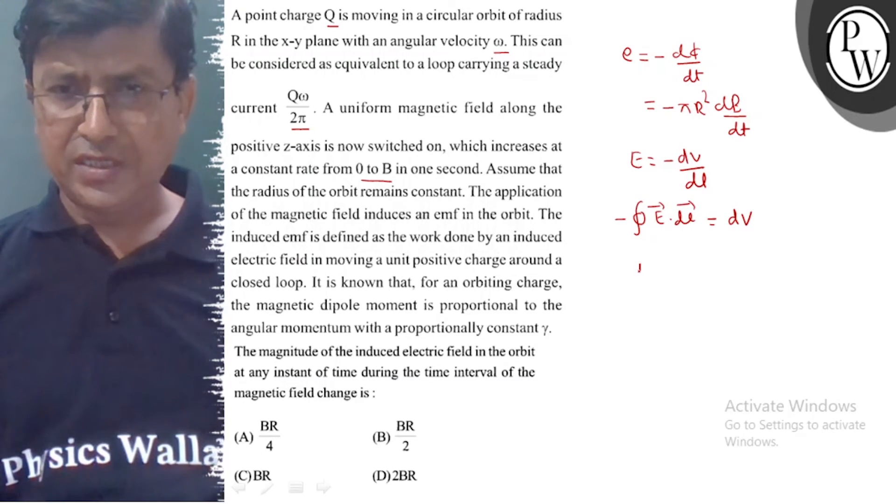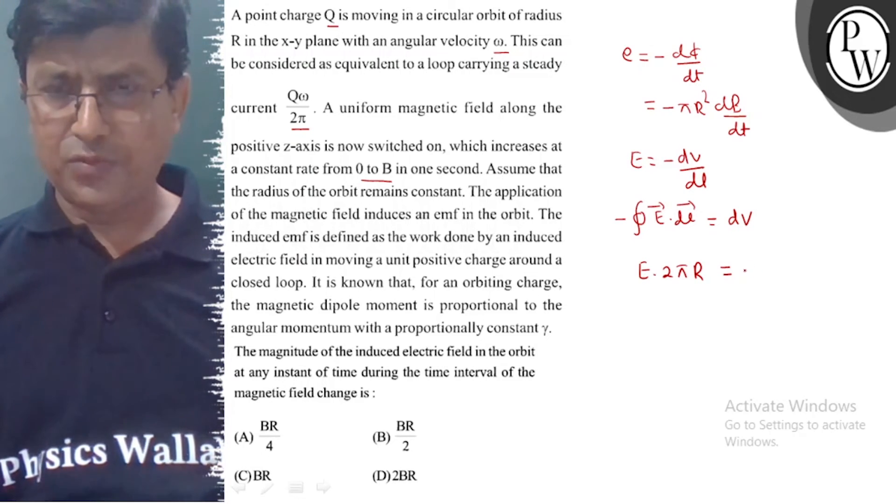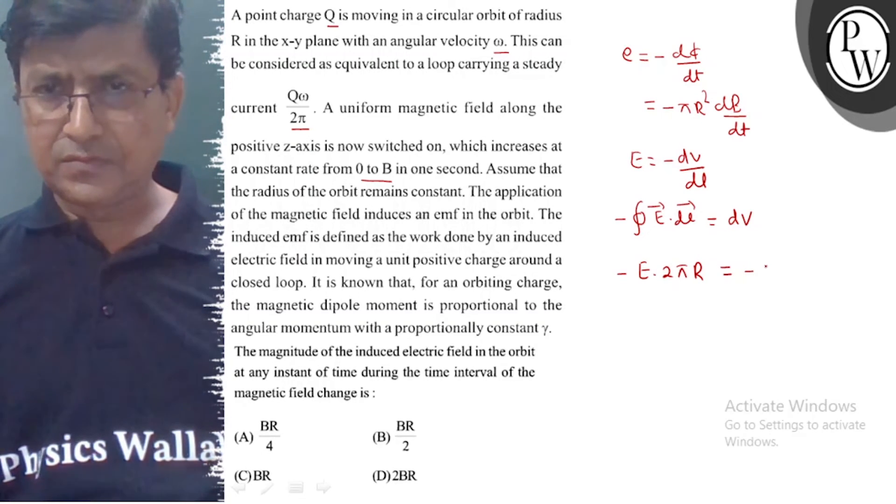If we see this loop, E into 2πR equals dΦ. The dΦ value we can calculate as πR² times dB/dt. So if we say that in one second 0 to B...